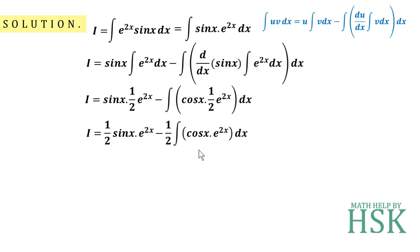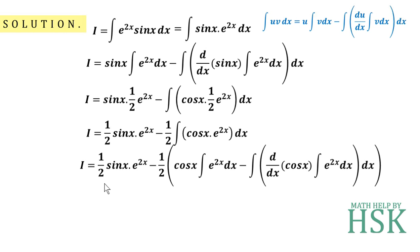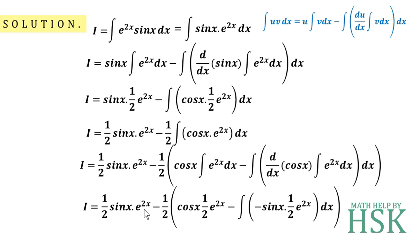Now I apply the formula of integration by parts again to ∫cos(x)·e^(2x) dx. This gives: cos x · (1/2)e^(2x) minus the differentiation of cos x times (1/2)e^(2x), and the integration of that product. The differentiation of cos x is −sin x, and the integration of e^(2x) is (1/2)e^(2x), so we integrate that remaining term as well.